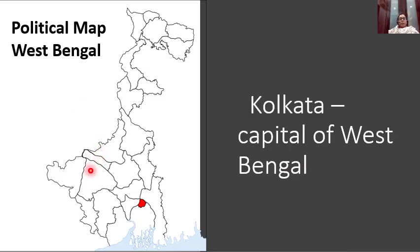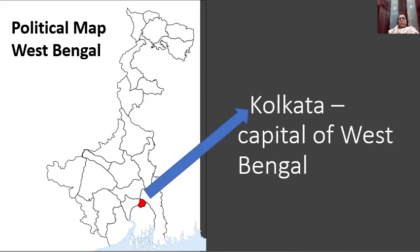This is the political map of West Bengal. West Bengal is divided into various parts — these parts are called districts. Here you can see one small part which is colored in red. This part is Kolkata. So Kolkata is the capital of West Bengal and also one of the districts of West Bengal.